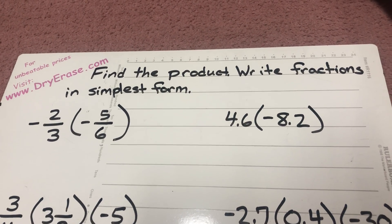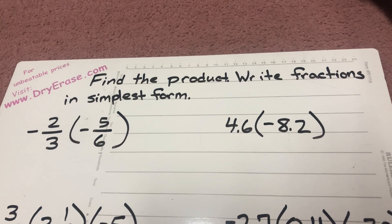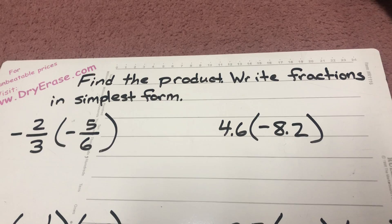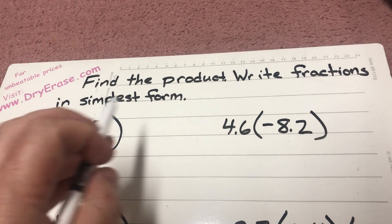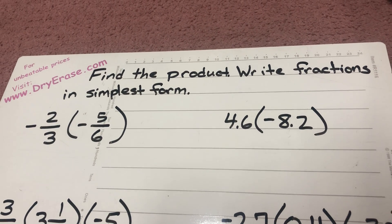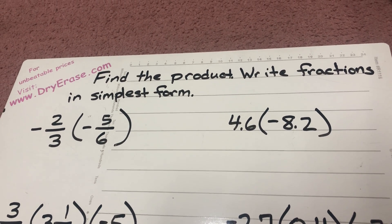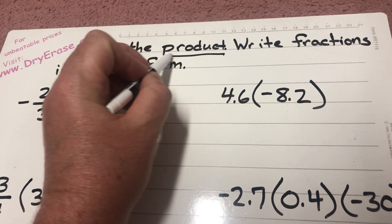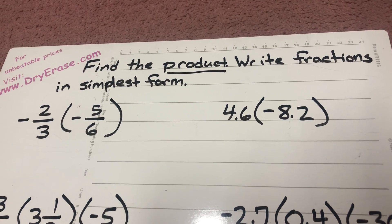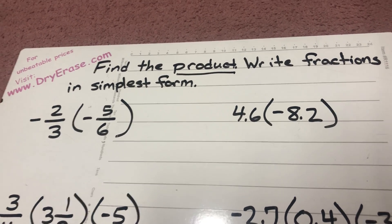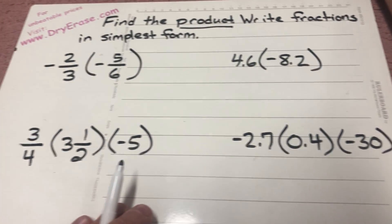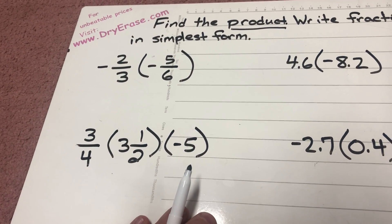Hello 7th graders. This is a tutorial video to help you on your assignment for today, Tuesday October 27. You have two sets of directions you're going to be working with. The first one tells you to find the product and write fractions in simplest form. When we're talking about the product we are talking about the answer to a multiplication problem. This first section involves multiplication and anytime we see different parentheses we know that that's multiplication.